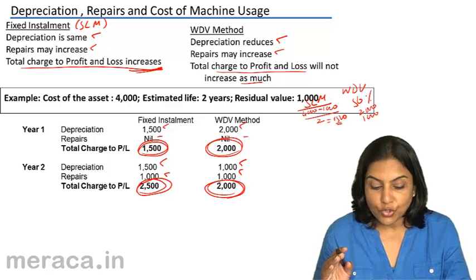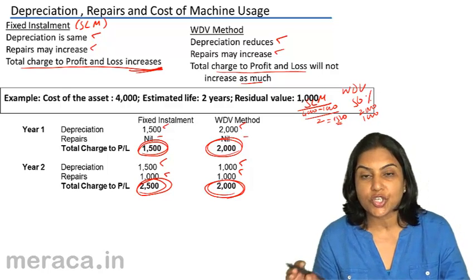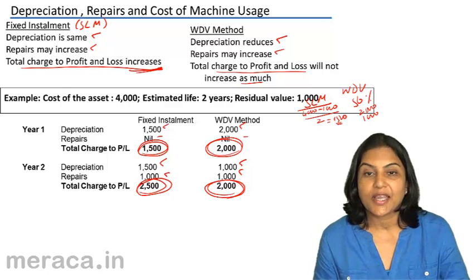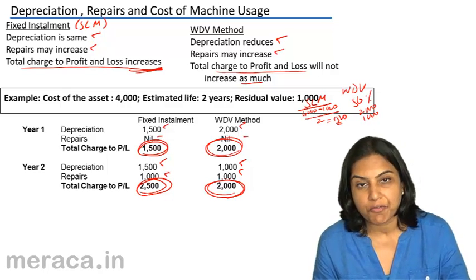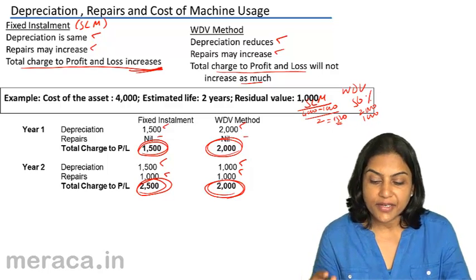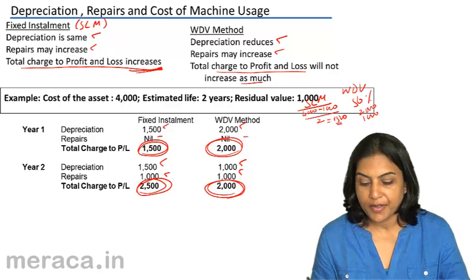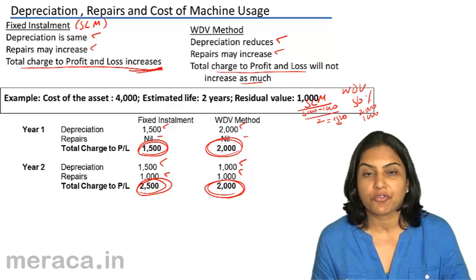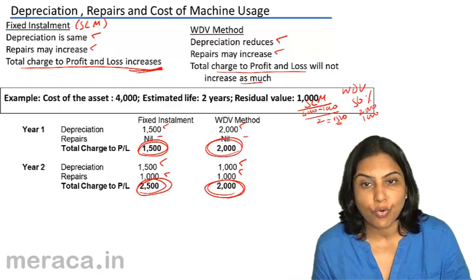Therefore, the total of repairs and depreciation — in other words, the total cost of machine usage — can be more or less kept at a uniform level. That is why the written down value method is preferred in the case of those assets which require a lot of repairs as the asset grows older.